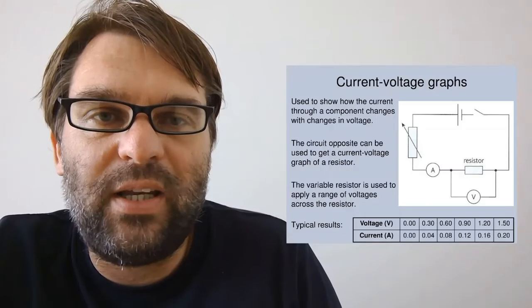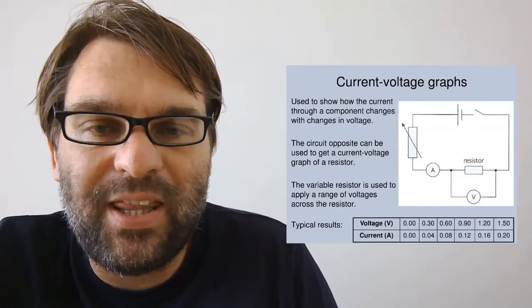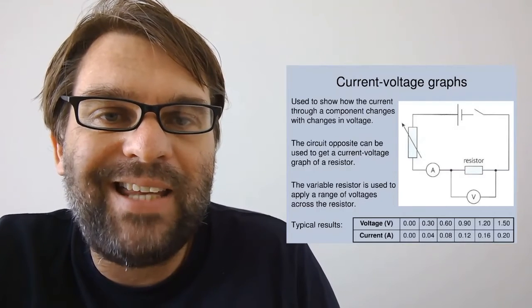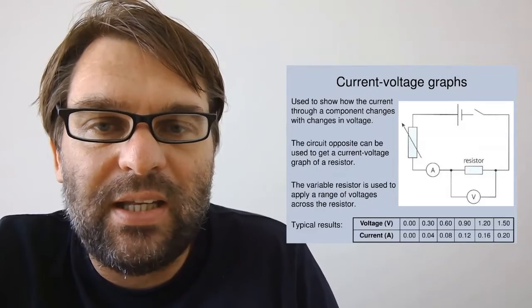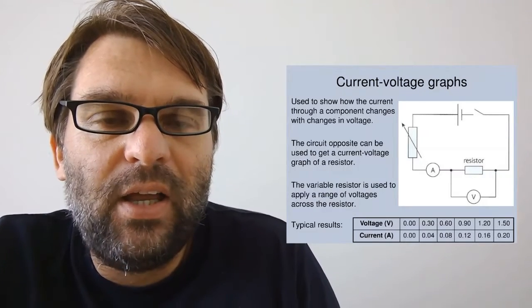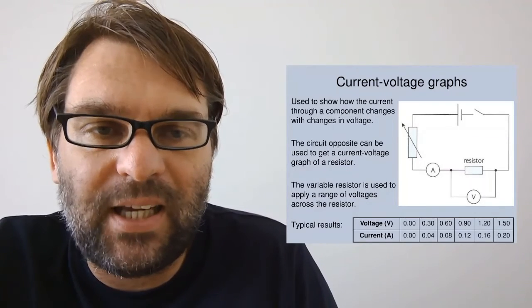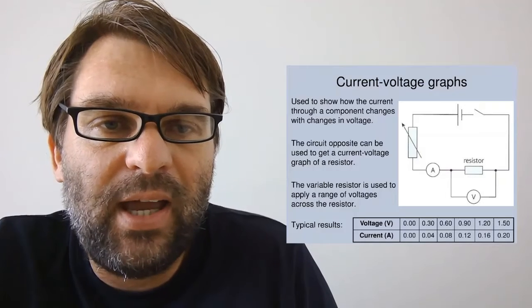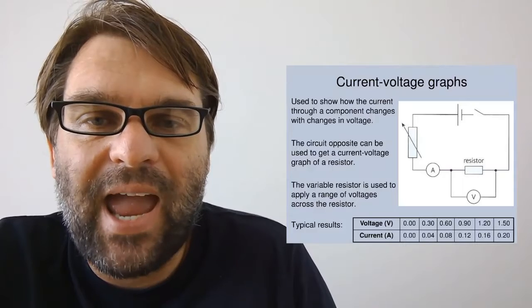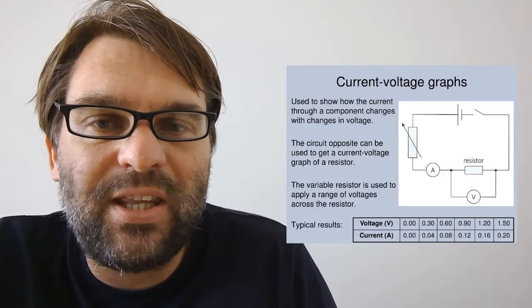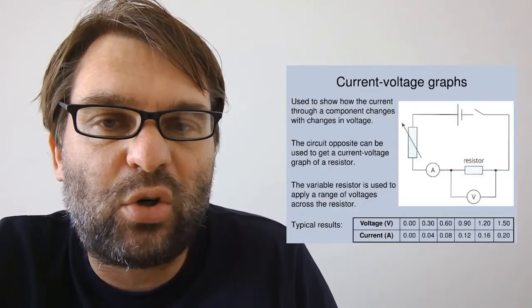This way you can generate current-voltage graphs. You can see from the image there - you basically create a circuit where you have a component that changes with the change in current. The circuit illustrated can be used to get a current-voltage graph for a particular resistance. You set up the voltmeter across the resistor, you have the ammeter in series in the circuit, and you use the variable resistor to apply a range of voltages across the resistor.